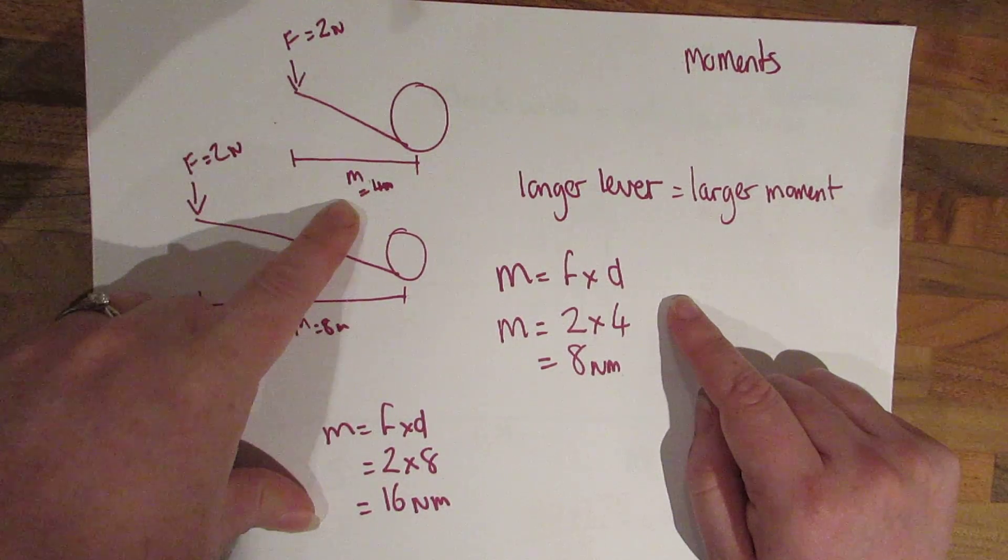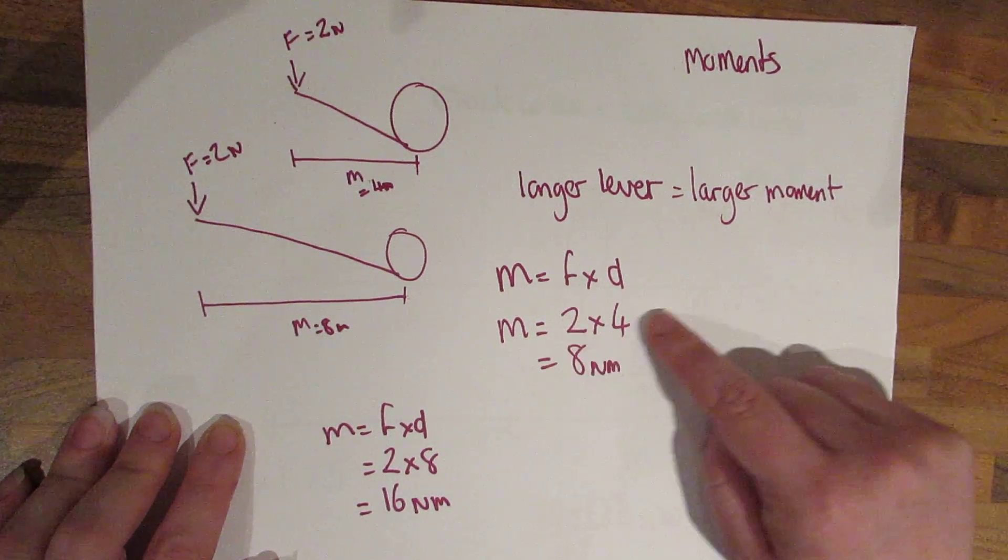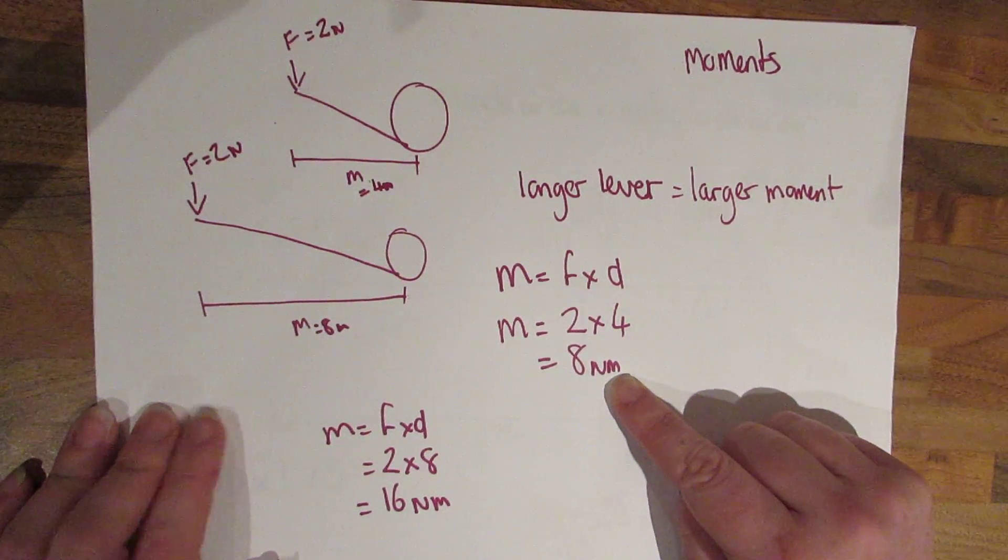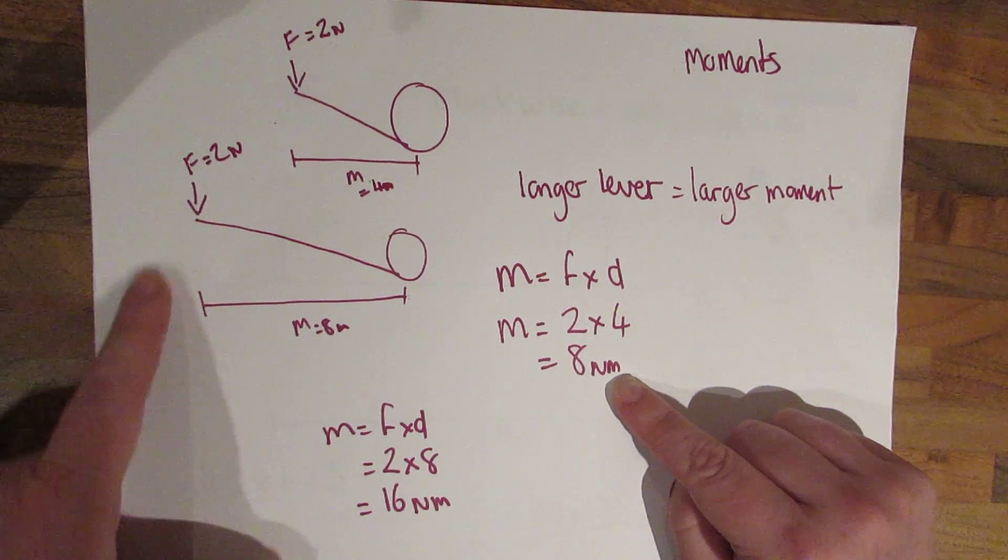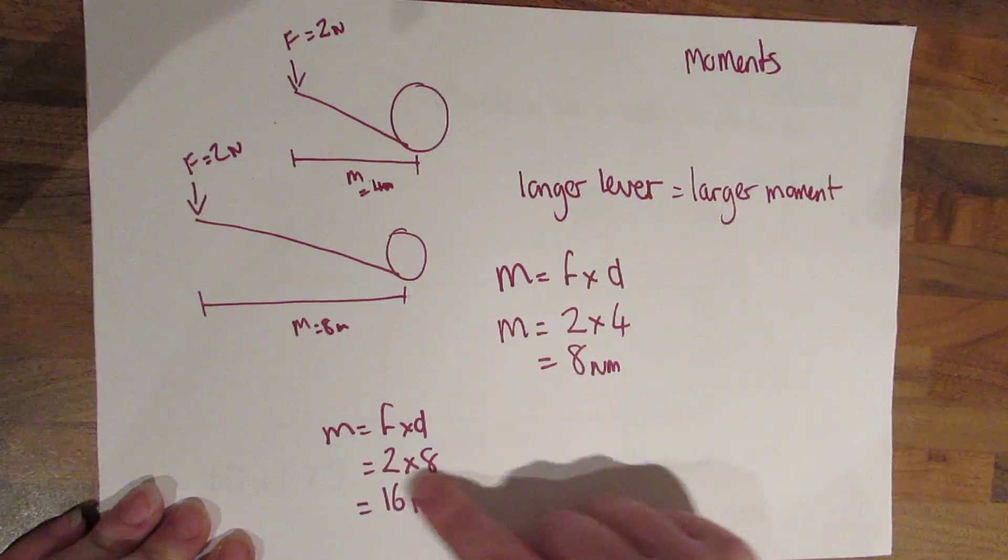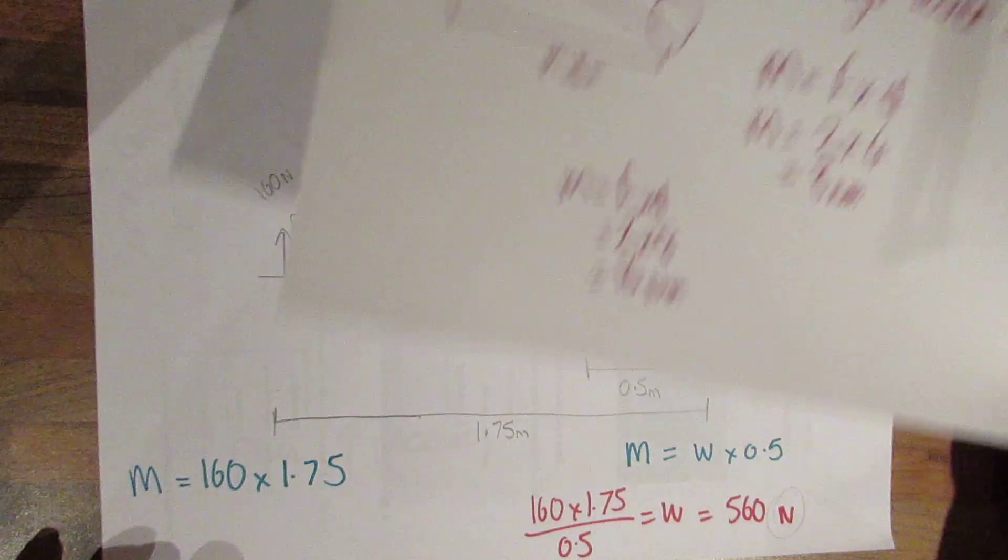So with our short lever here, we have a distance of four metres and a force of two newtons, so two times four is eight newton metres. I've increased the distance of the lever here to eight metres. Same force, two times eight is sixteen newton metres. So a longer lever equals a larger moment.